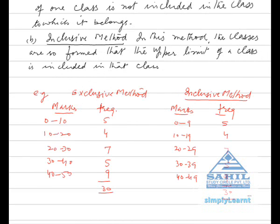For example, on the left side we have data arranged according to exclusive method. On the right side we have the same data arranged by the inclusive method. Marks 0 to 10, 10 to 20, and so on. Frequency is 5, 4, 7, 5, 9, making a total of 30.